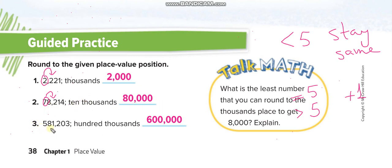Next: 581,203 rounded to the nearest hundred thousand. We circle 5 in the hundred-thousands place. We check the next digit, which is 8 — more than 5, so we add one: 5 becomes 6, and all remaining digits become zeros, giving us 600,000.